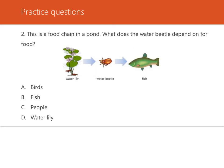Number two: this is a food chain in a pond. What does the water beetle depend on for food? When reading a food chain left to right, the energy from the water lily is transferred to the water beetle, and the energy from the water beetle is transferred to the fish — because the fish eats the water beetle, and the water beetle eats the water lily. So the water beetle depends on the water lily for food. The answer is D.